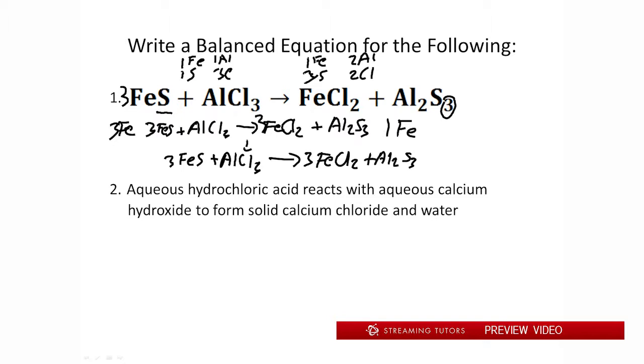So now we get 3FeS plus AlCl3 goes to 3FeCl2 plus Al2S3. So our irons are now balanced. Our sulfurs are balanced. The last thing we need to address is our chlorine. So chlorine over here has three. Chlorine over here now has six. That's just two times three. So what we need to do is multiply our aluminum chloride by two. So if we do that, I'll just go over here. We have FeS with a three plus AlCl3 with a two goes to 3FeCl2 plus Al2S3. That's our balanced equation.